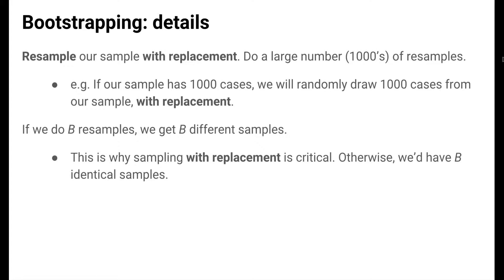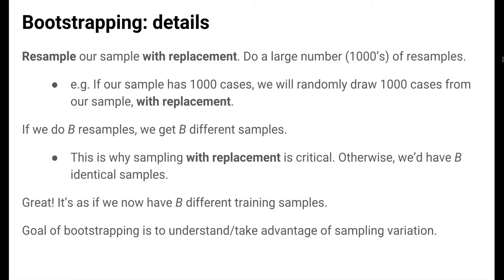How does bootstrapping work? In bootstrapping, the idea is to resample our sample with replacement. We want to do a large number — in the thousands — of these resamples. For example, if our training set has 1,000 cases, we'll randomly draw 1,000 cases from our training set with replacement. If we do B of these resamples, we'll get B different samples. Sampling with replacement is absolutely critical — if we sampled without replacement, we'd get B identical samples. At the end of bootstrapping, it's as if we now have B different training samples.